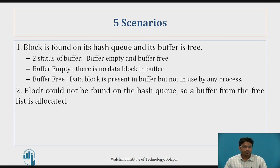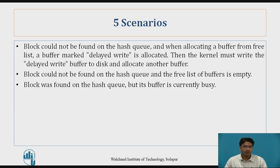Second scenario: the data block could not be found on the hash queue, so a buffer from the free list is allocated to that process by the kernel. Third scenario: the data block could not be found on the hash queue, and when allocating a buffer from the free list, a buffer marked delayed write is allocated — then the kernel must write the delayed write buffer to the disk and allocate another buffer.